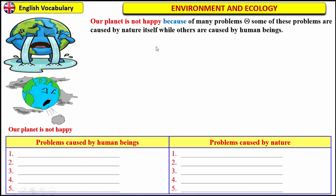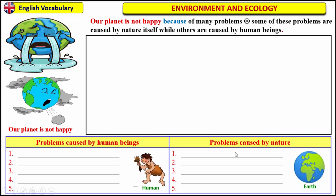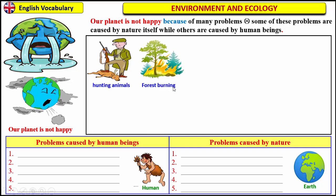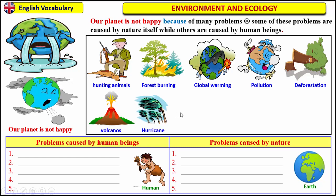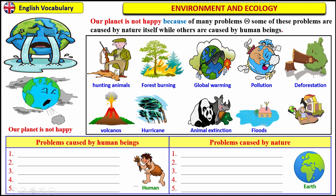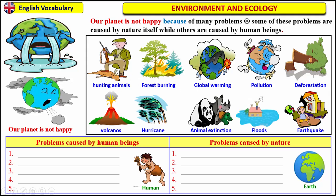Here is a list of problems caused by nature and by human beings. You should classify them in the chart below. In this chart, you have problems caused by human beings and problems caused by nature. Here is the list of problems: hunting animals, forest burning, global warming, pollution, deforestation, volcanoes, hurricane, animal extinction, floods and earthquake.